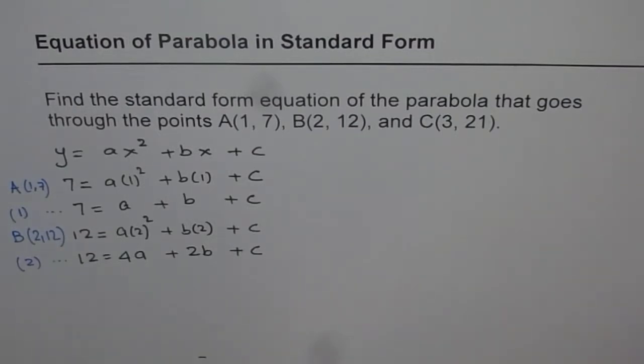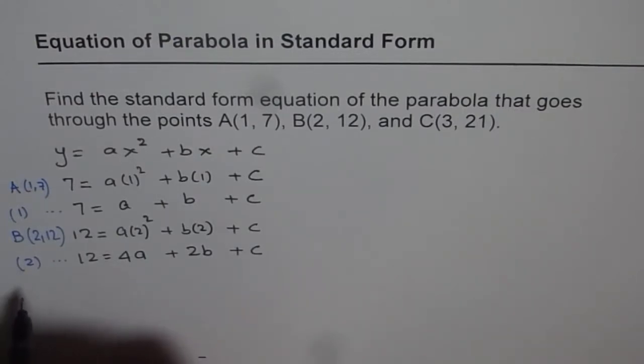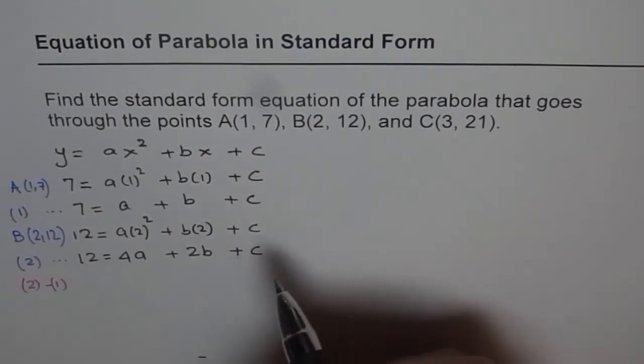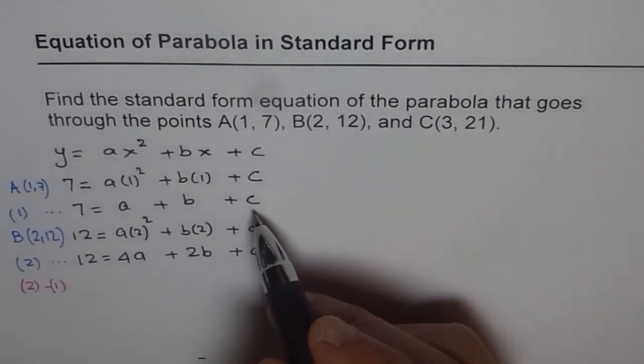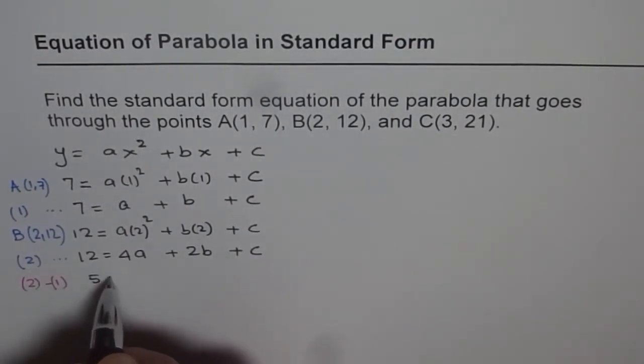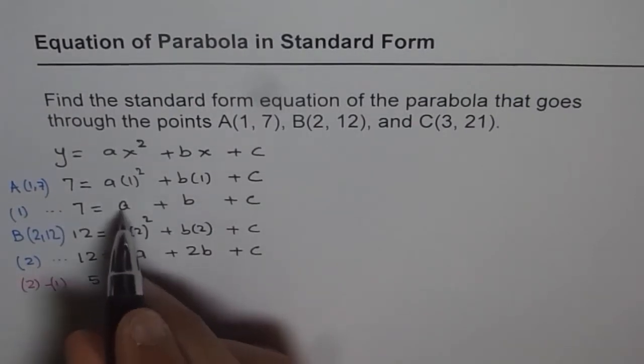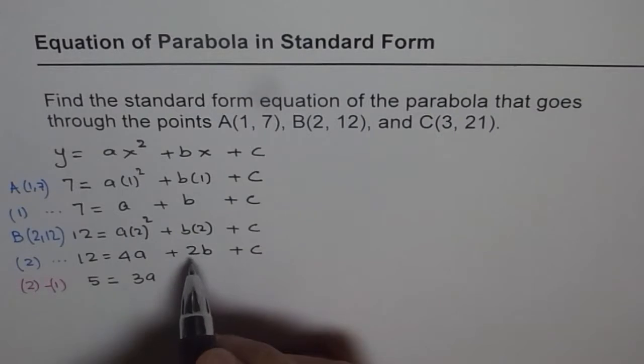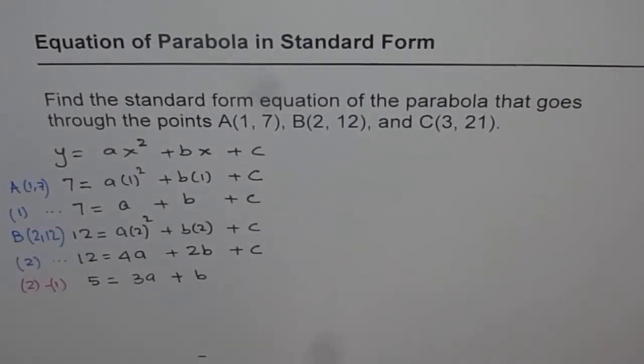Now from these two equations we can eliminate c. So from equation 2, we can do equation 2 minus equation 1. So if we do that we can eliminate c from these two equations. What we get is 12 minus 7 is 5 equals 4a minus a is 3a, and 2b minus b is b. So c is eliminated.